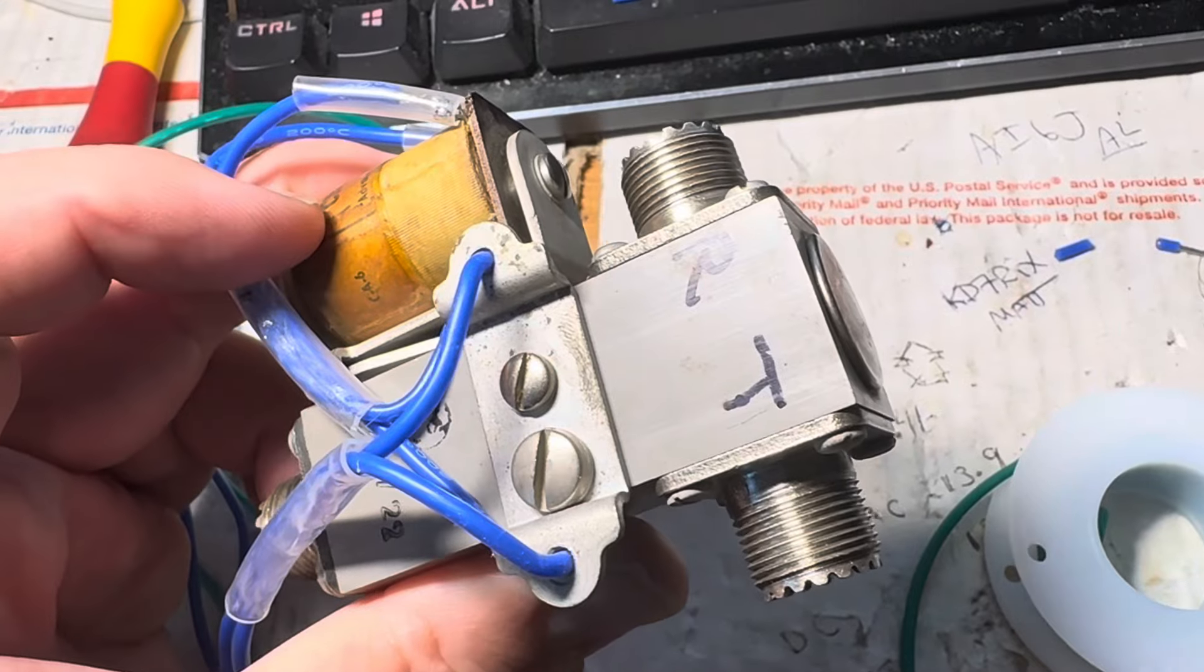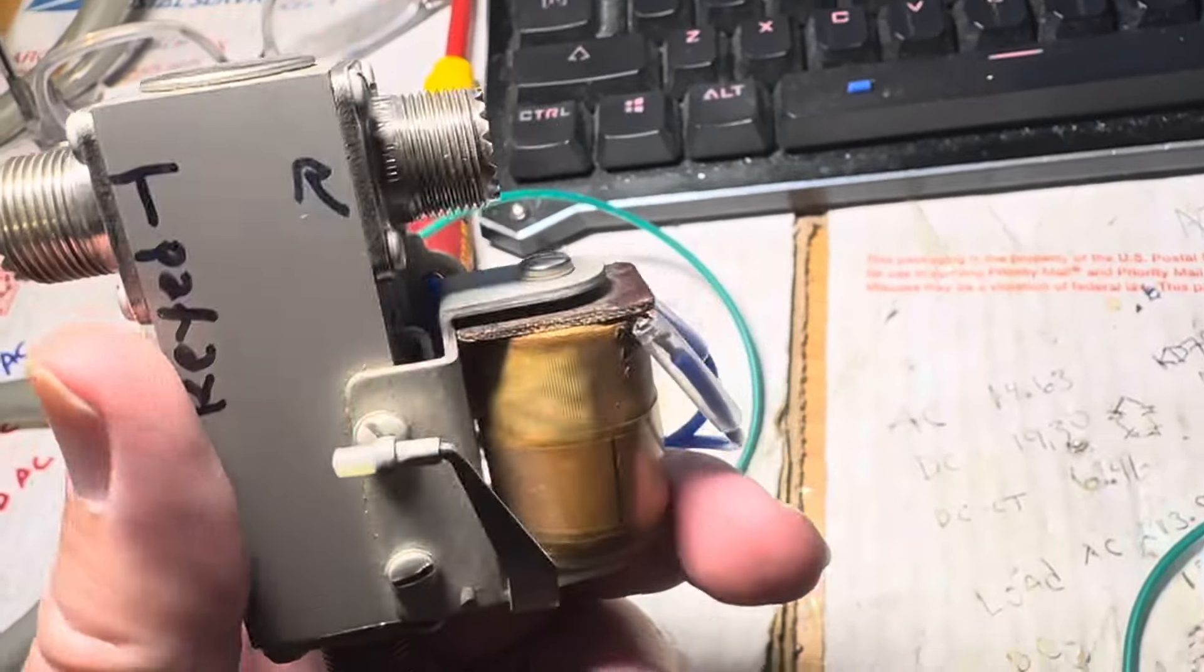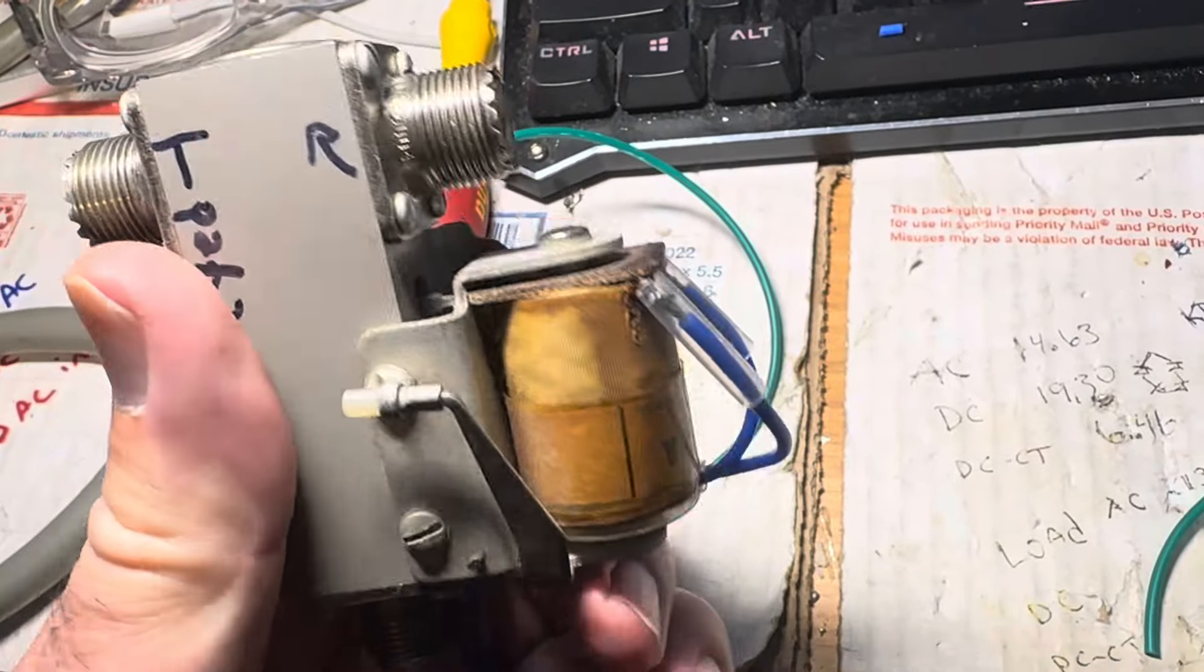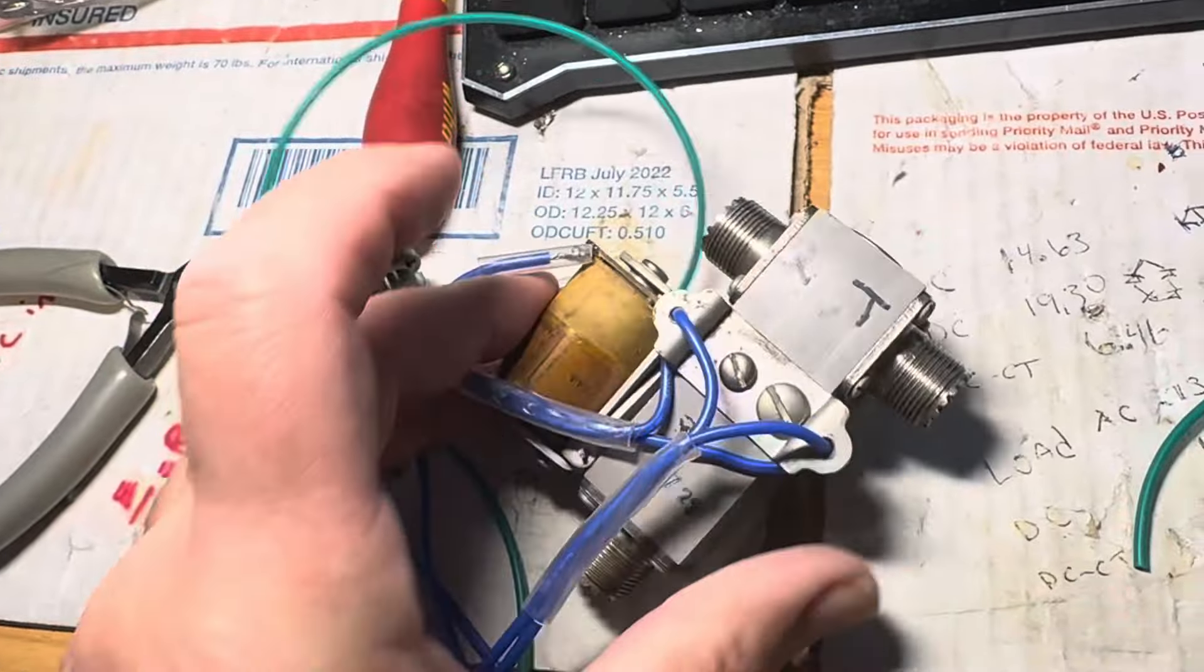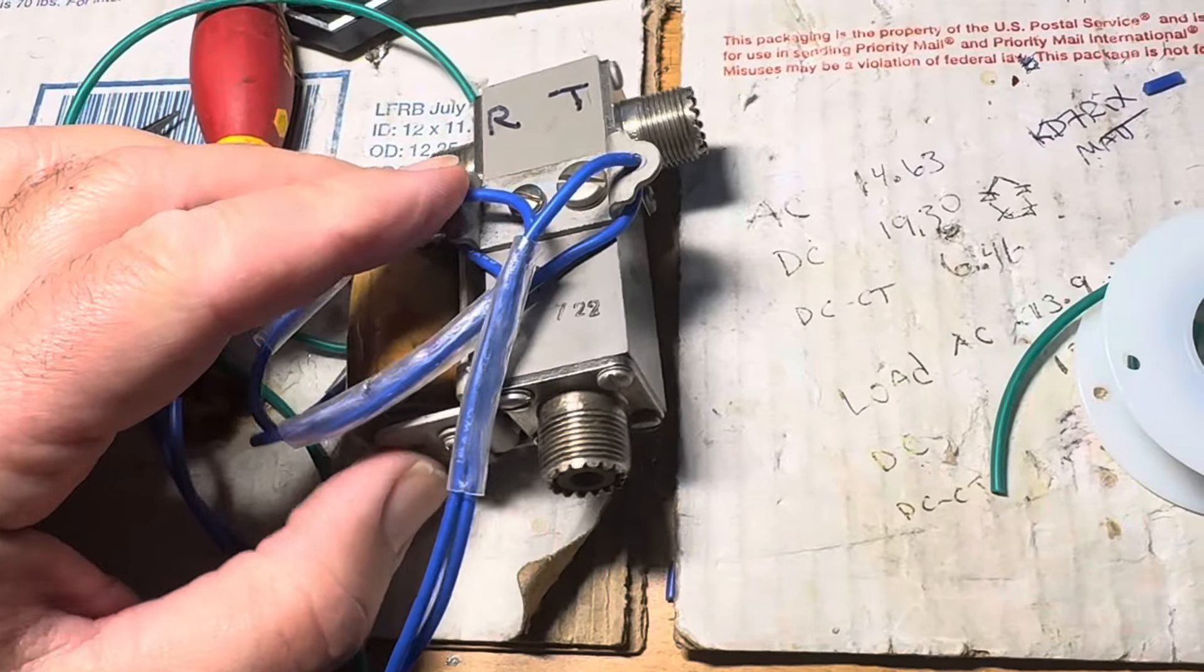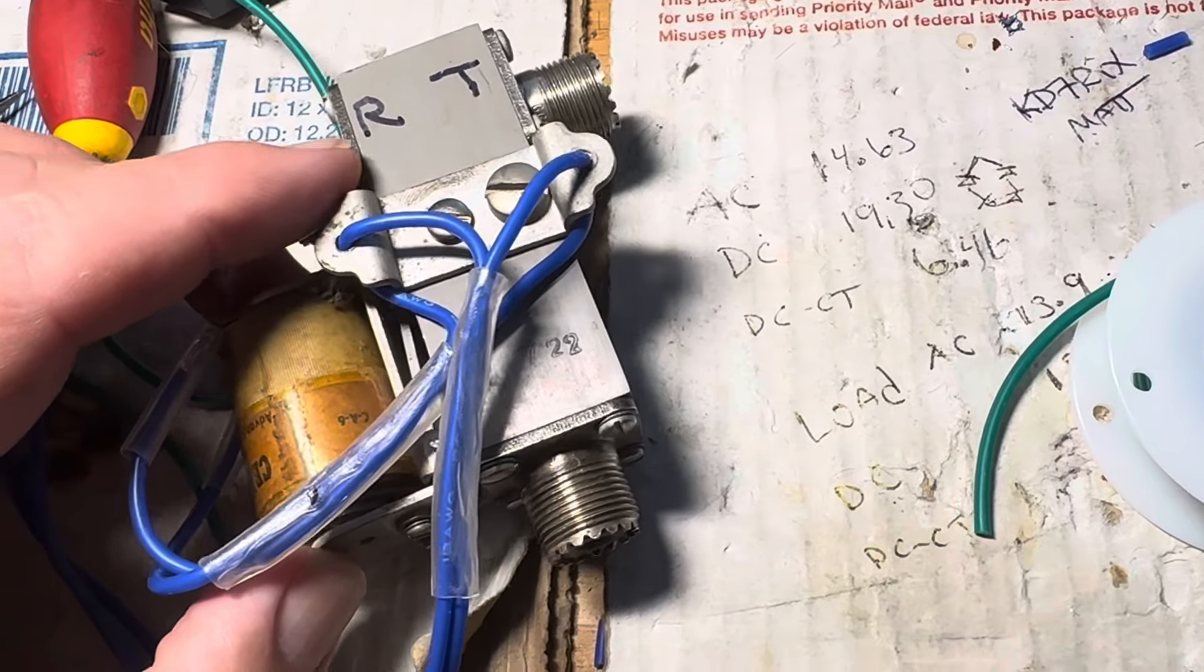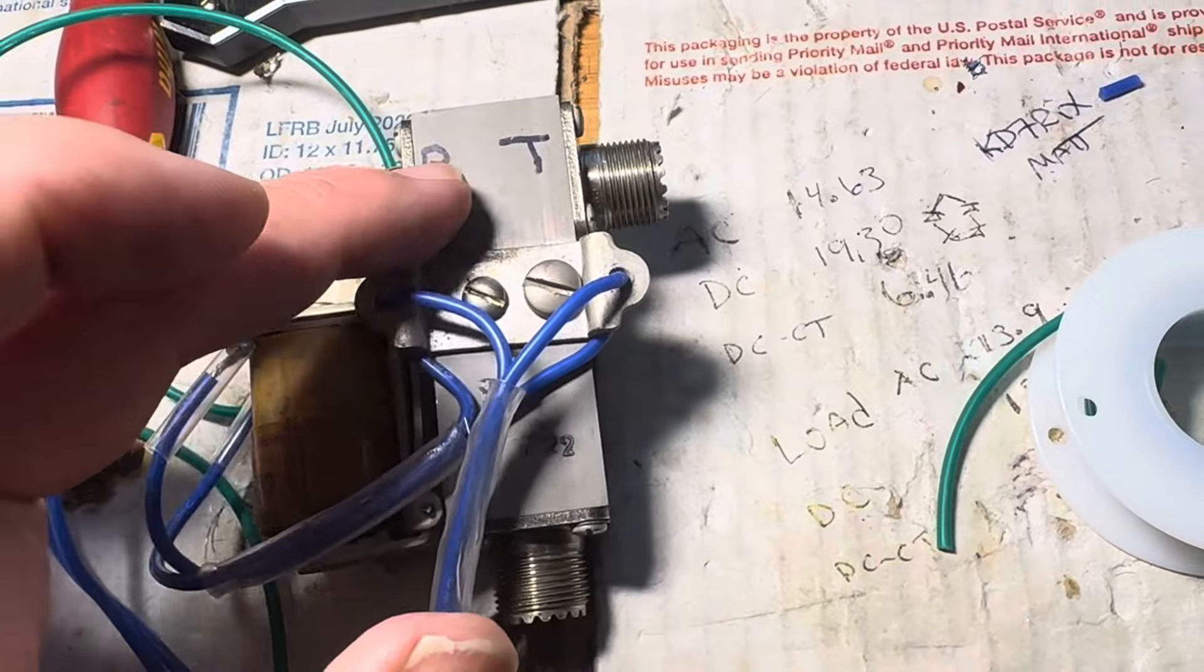So the idea here is the transmitter will put 110 volts into this coil and it will magnetically bring this lever down with this solenoid. This lever will actuate and that will move a switch in here from receive to transmit. Your antenna goes here, receiver goes here, transmitter goes there.